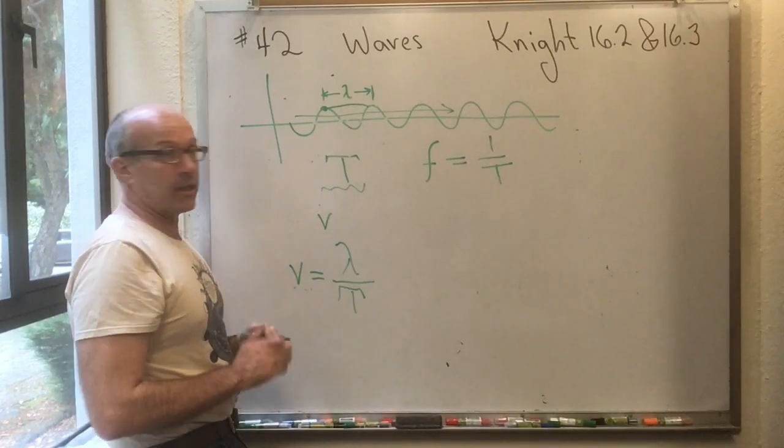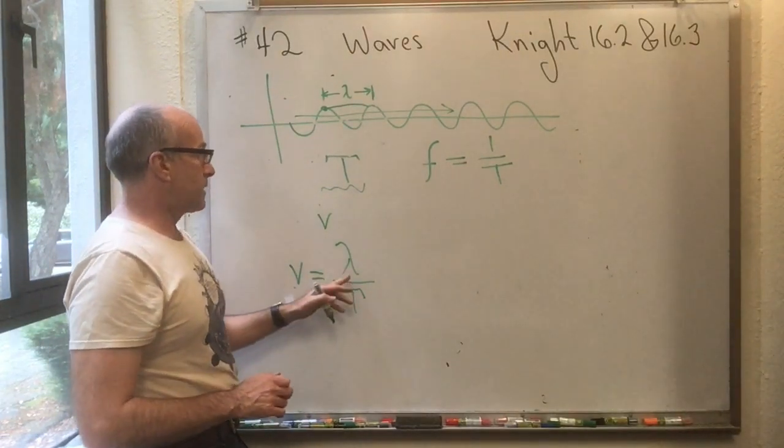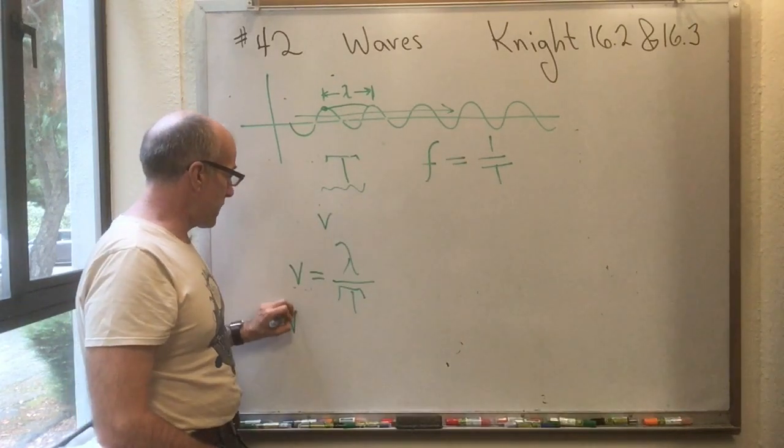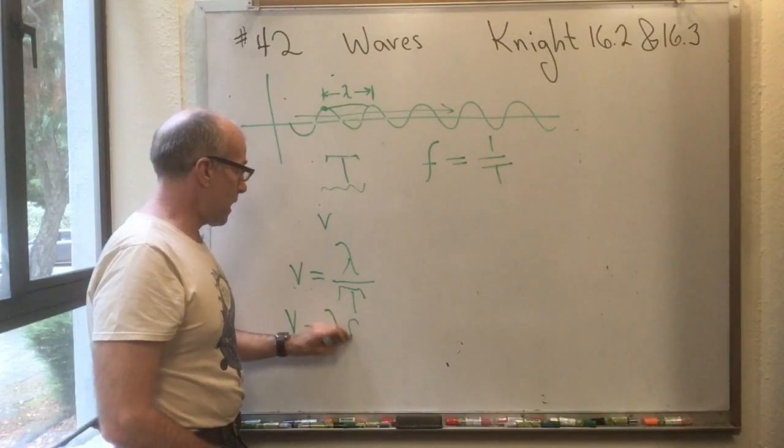So there's a relationship, V, lambda, and T. And since F is 1 over T, you have another relationship, V is equal to lambda F.